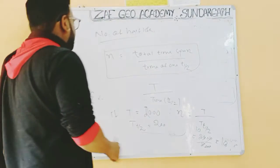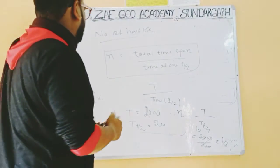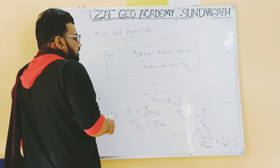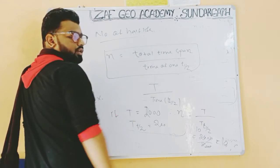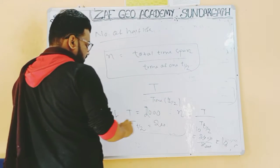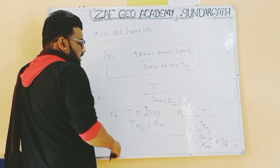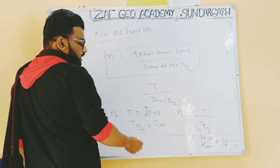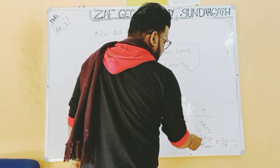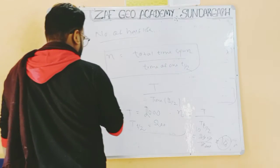For the number of half lives: if the number of half lives is not given, we calculate it using n = T / t½, where T is the total time span and t½ is the time of one half life. For example, if T = 2000 and t½ = 200, then n = 10.